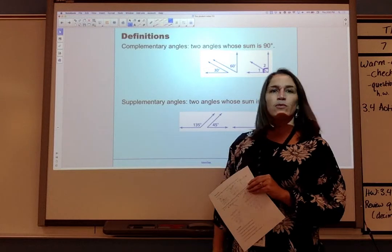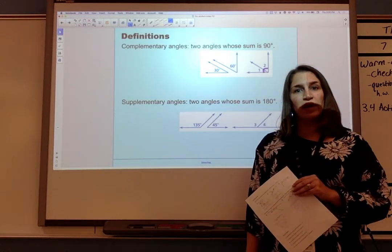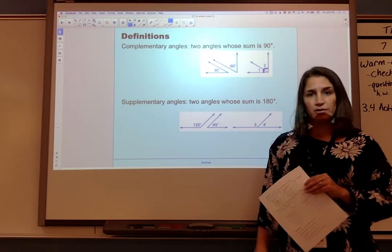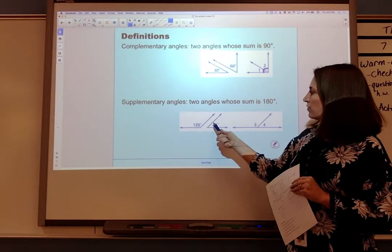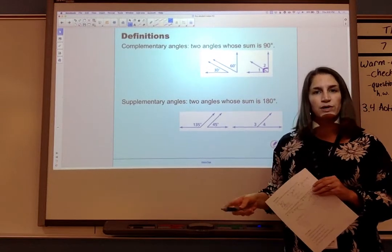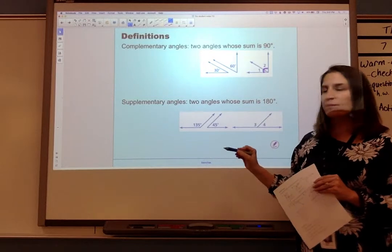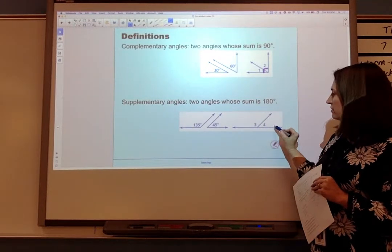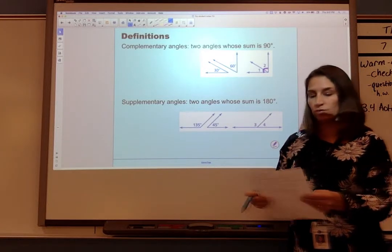Our second vocabulary word is supplementary angles. Supplementary angles are two angles whose sum is 180 degrees. The first set of angles I can tell is supplementary because 135 plus 45 is 180. And my second set of angles I can tell is supplementary because they're adjacent angles and they form a straight line. So they form a 180 degree angle in total.